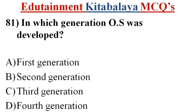Question number 81. In which generation was the OS developed? A. First generation. B. Second generation. C. Third generation. D. Fourth generation. Correct answer is C. Third generation.